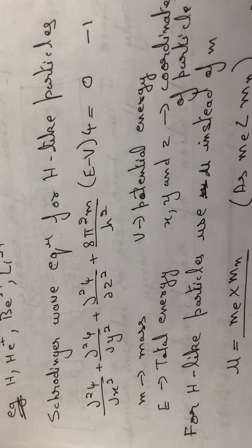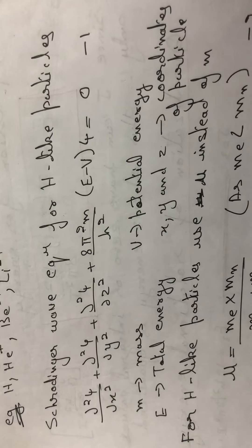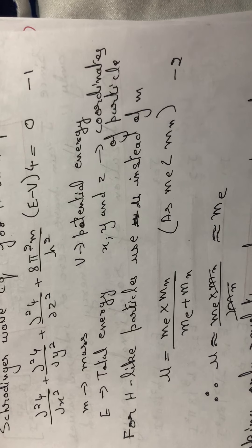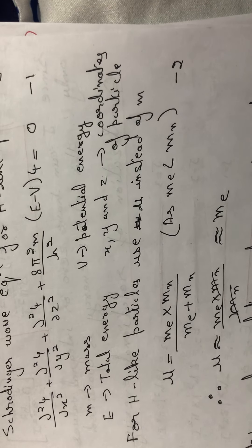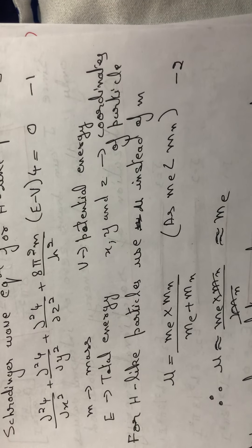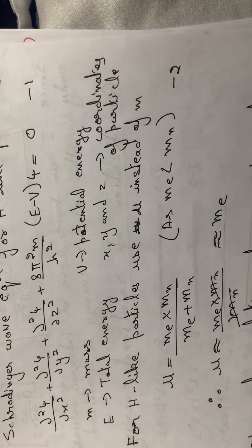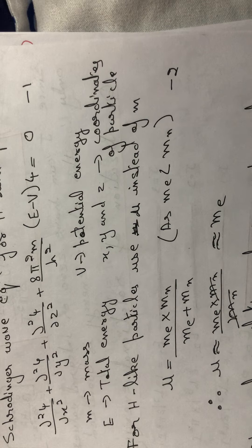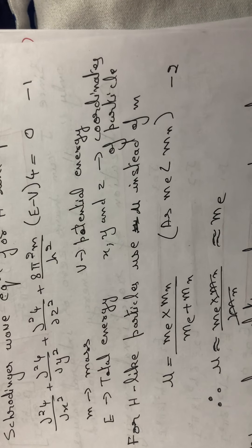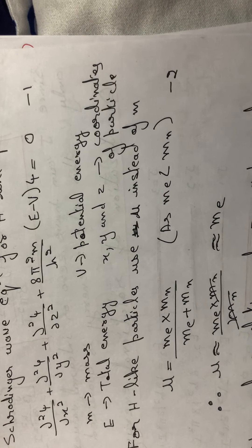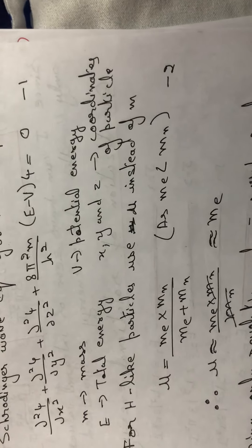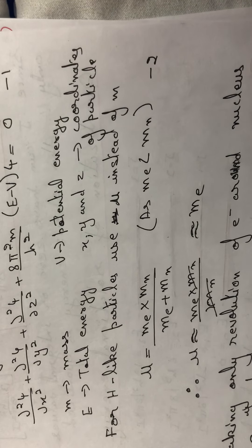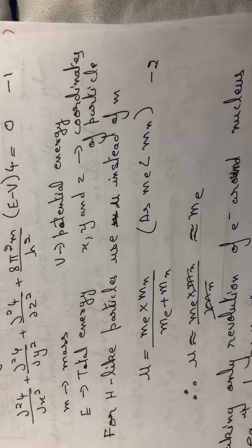In the equation, m stands for mass, V is the potential energy, E is total energy, and x, y, z are the coordinates of the particle. For a hydrogen-like particle, we don't use mass m — we use μ, the reduced mass. The reduced mass is μ = m₁·m₂ / (m₁ + m₂). Here m₁ is the mass of the electron and m₂ is the mass of the nucleus, so μ = mₑ·mₙ / (mₑ + mₙ).